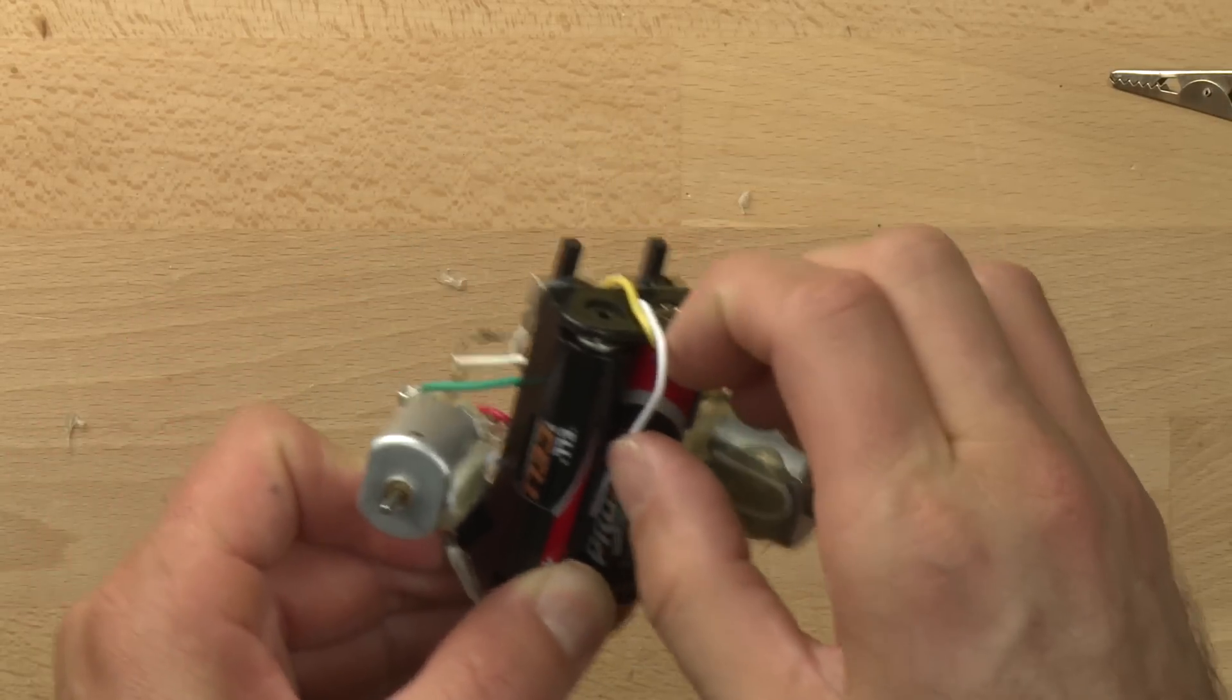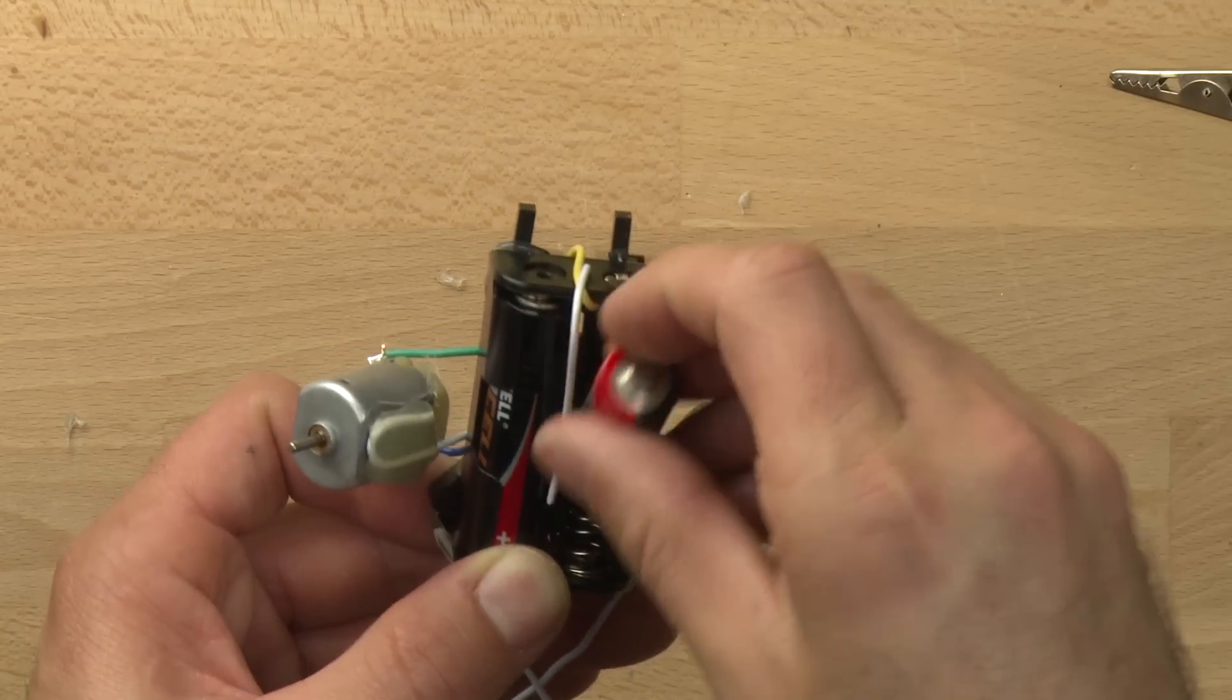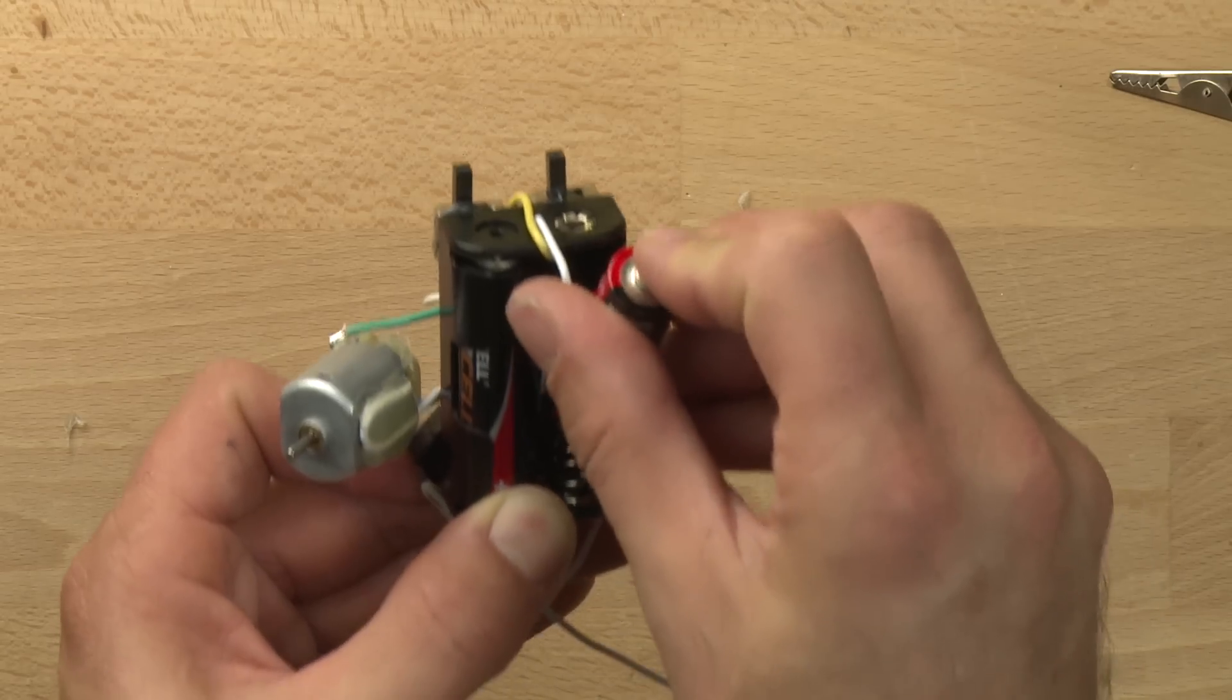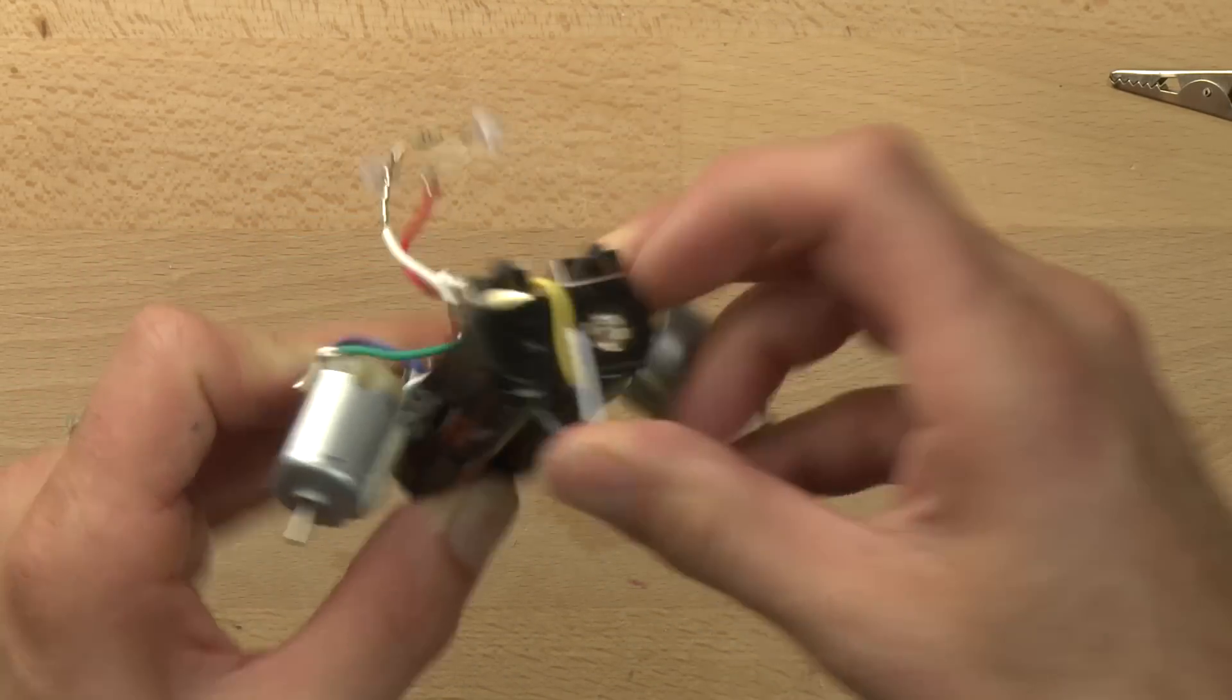You know, one of the things we can do is just pop some of these things out. And then when we put the battery back in, it should help to hold the tail in place.